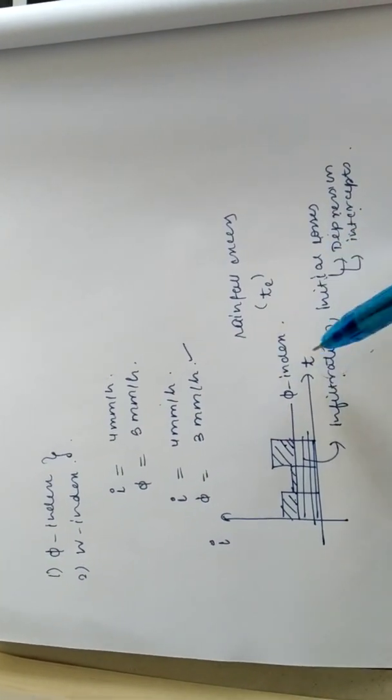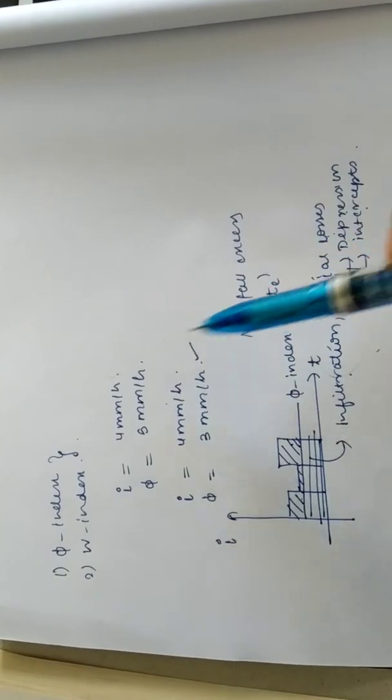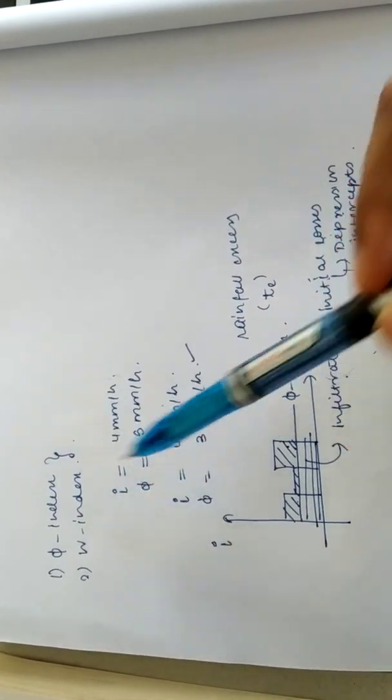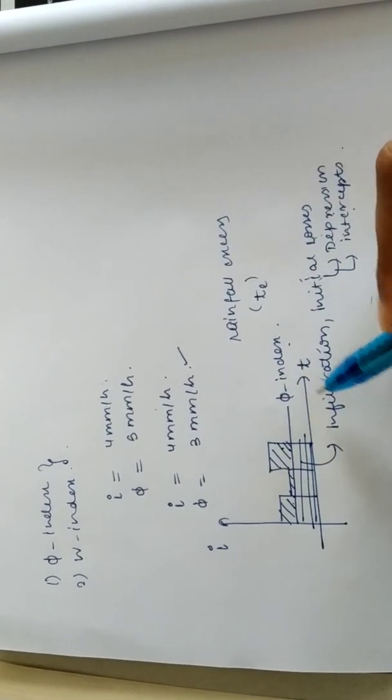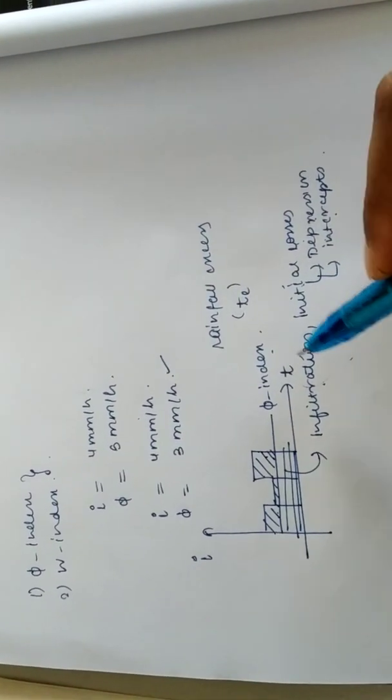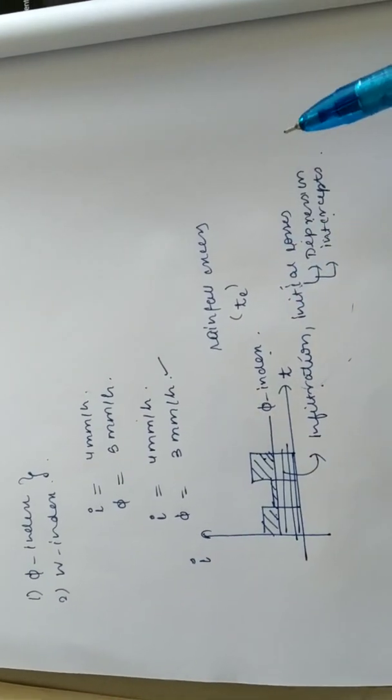W index is also similar to phi index. Just the difference is W index will give you the pure infiltration whereas phi index gives you all the losses that are occurring from the rainfall other than runoff.